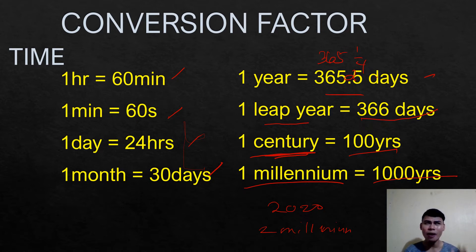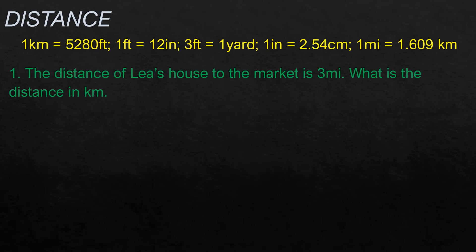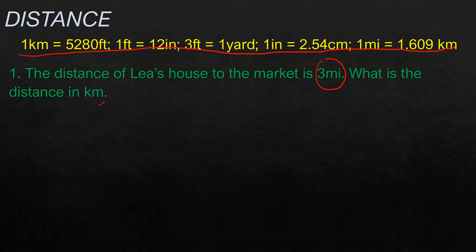Now let's have examples. For distance, these are our conversion factors written in yellow — we need to memorize or familiarize ourselves with them because they're essential in solving conversion problems. For example: the distance of Leah's house to the market is three miles. What is the distance in kilometers? This type of question requires a conversion factor and the conversion process.